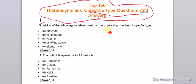The first question: which of the following variables control the physical properties of a perfect gas? Pressure, temperature, volume, and all of the above. Atomic mass is the incorrect answer and the correct answer is D, all of the above.